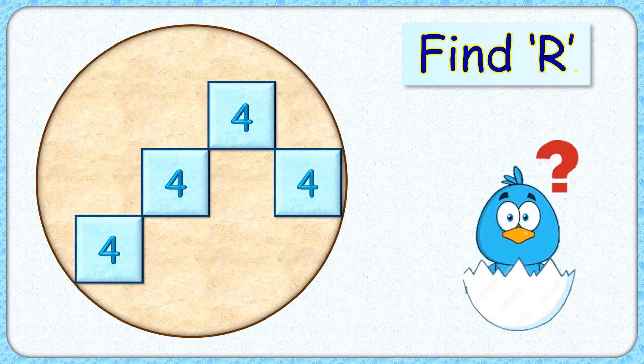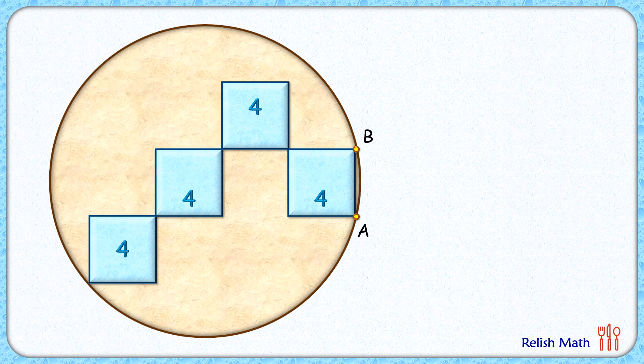Welcome everyone to this interesting question where given is a circle with 4 squares inside it. Area of each square is 4 cm square. The exciting part is with this limited data we have to find the radius of this circle. Let's check this simple and elegant solution.